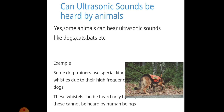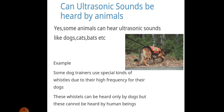For example, some dog trainers use special kinds of whistles of high frequency for their dogs. This is also used by police, like CID police who use dogs. This whistle can be heard only by dogs but cannot be heard by human beings. It is used to detect thieves.